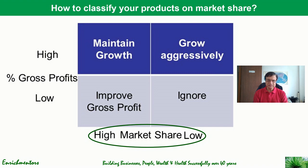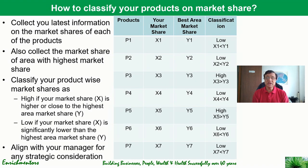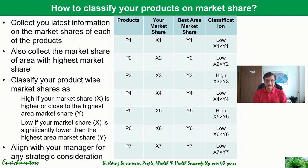Having classified products on gross profit, how do you classify them on market share? You do a similar analysis — collect market share data for your products P1 to P7 in your area. Then find out which area in the country has the highest market share for each product category. For example, if one product is baby powder and your market share is 3.7% but Kerala's market share is 11.6%, then the best area market share benchmark becomes 11.6%.